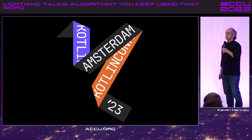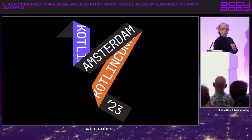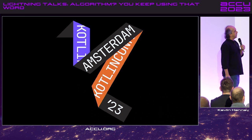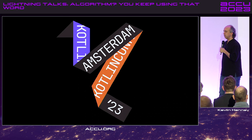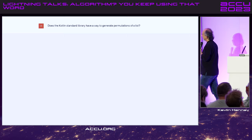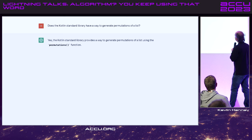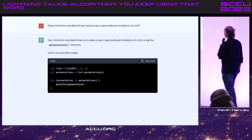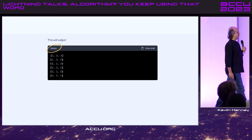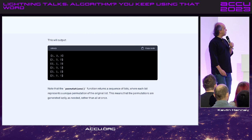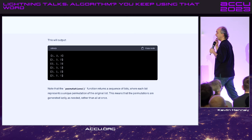So I did a bit of searching, and my Google-fu was failing me — I was struggling to find the relevant pieces. So, enter ChatGPT. I asked: does the Kotlin standard library have a way to generate permutations of a list? It said yes — generate permutations of a list using the permutations function. Awesome. Here's example usage. Excellent. And it noted that the permutations function returns a sequence of lists where each list represents a unique permutation, meaning permutations are generated lazily. This is very specific and also very cool.